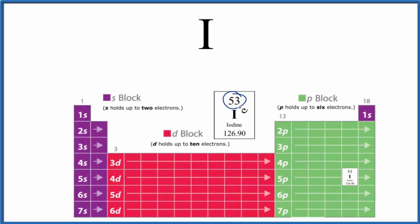So we have 53 electrons to write the configuration for iodine, just neutral iodine.